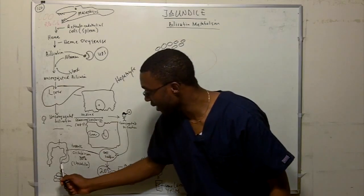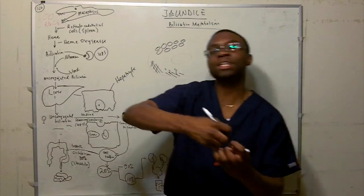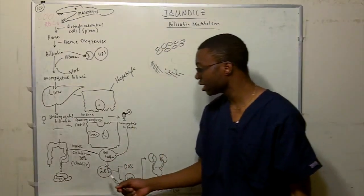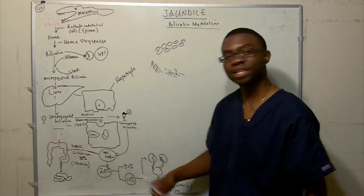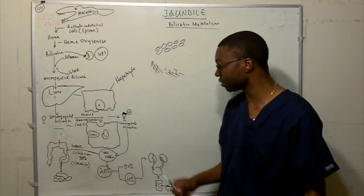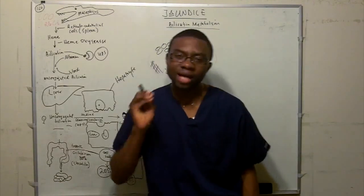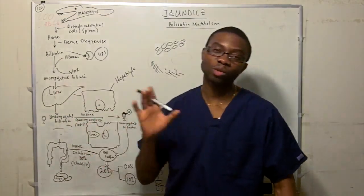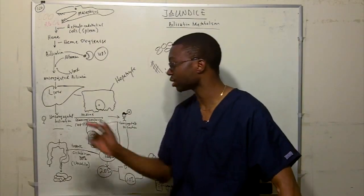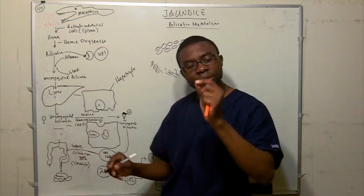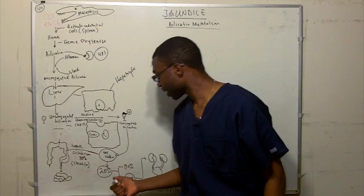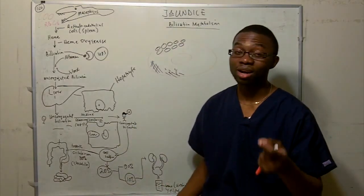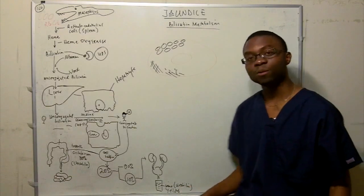Of the bilirubin entering the gut, 20% is reabsorbed back into the portal system. Of that 20%, 90% returns to the liver for storage, which is good. But 10% spills into the bloodstream, goes to the kidneys, gets filtered out, and that small amount of bilirubin is what keeps urine yellow.